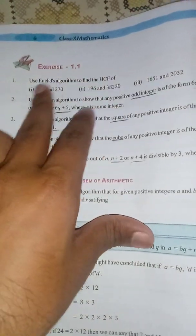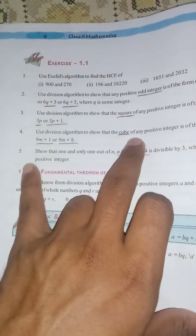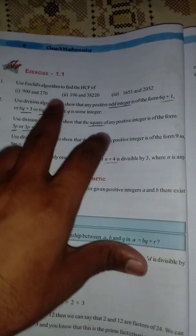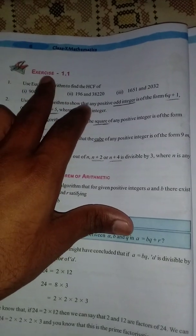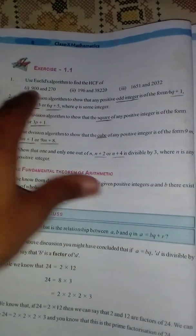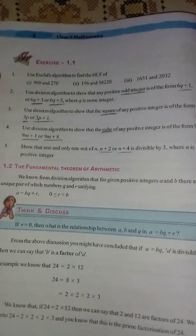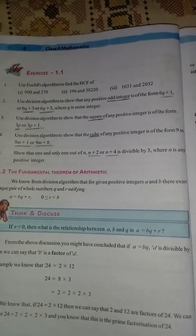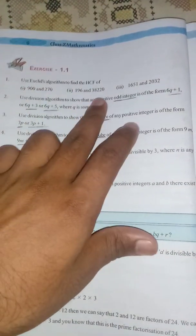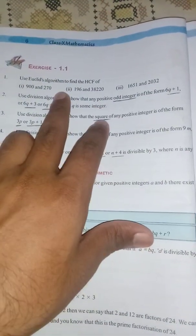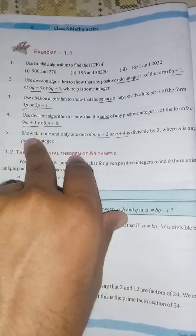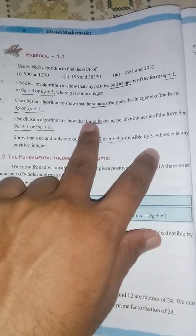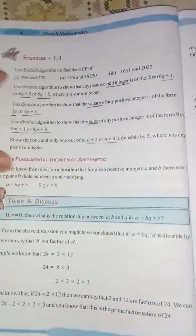In this chapter there is Exercise 1.1. Here are five questions in this exercise. You can look here at Exercise 1.1, the first chapter Real Numbers. There are only five questions. In the first question we need to find HCF, and then second question, third question, fourth and fifth. We are looking at all the answers for the five questions.